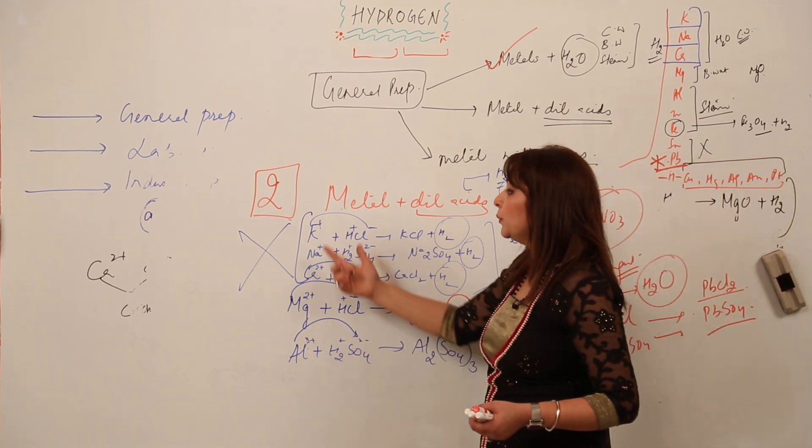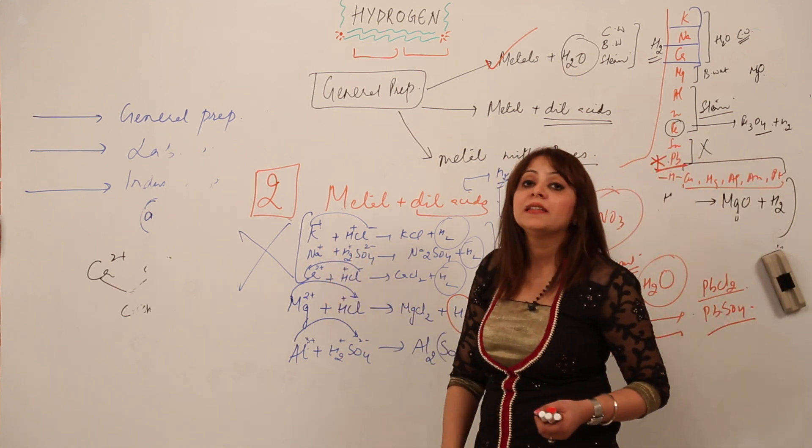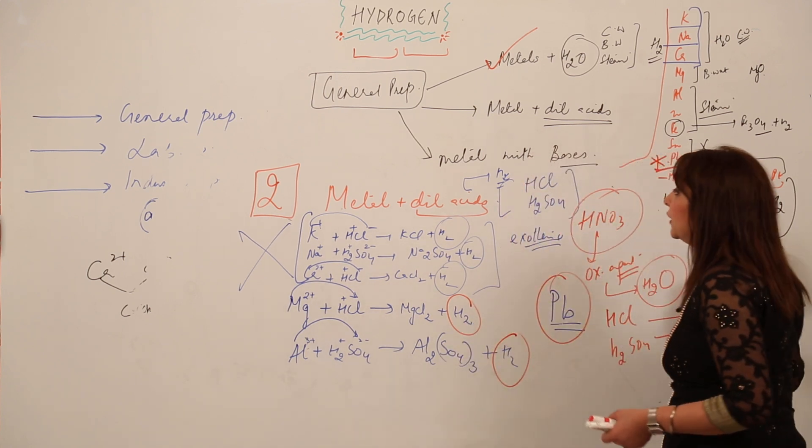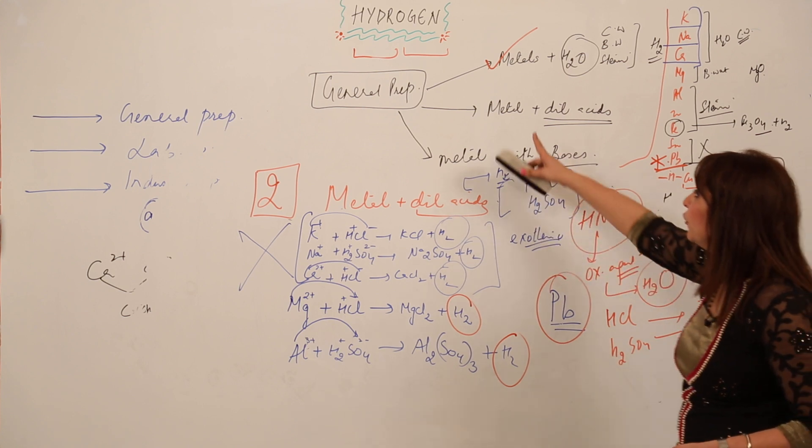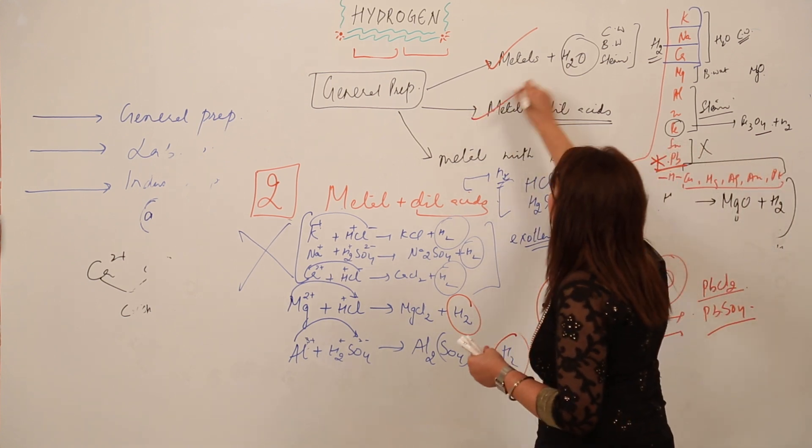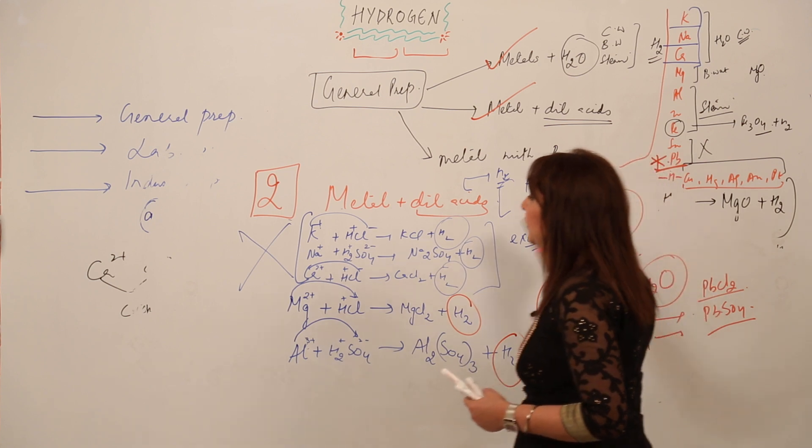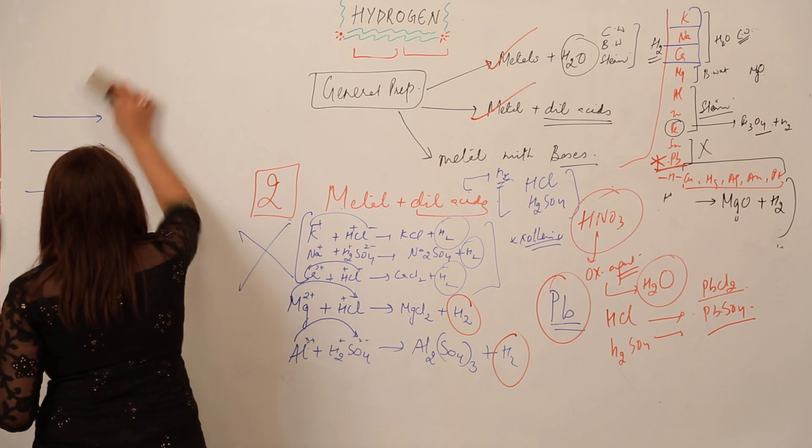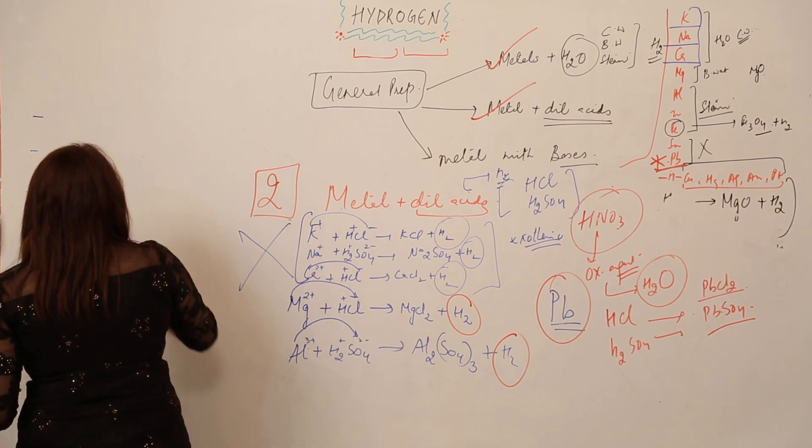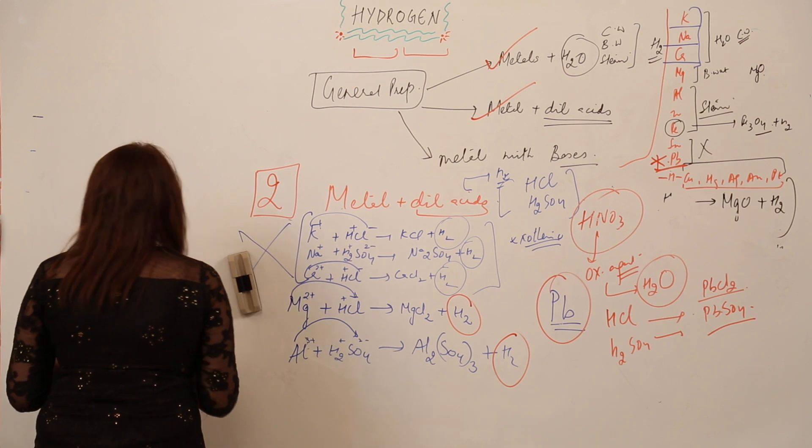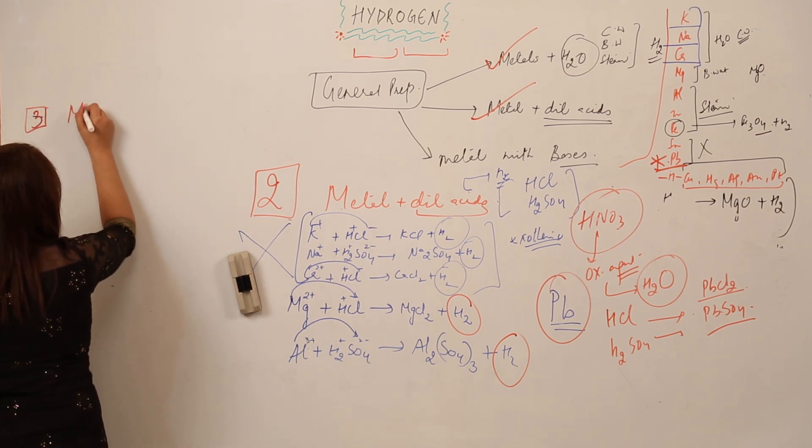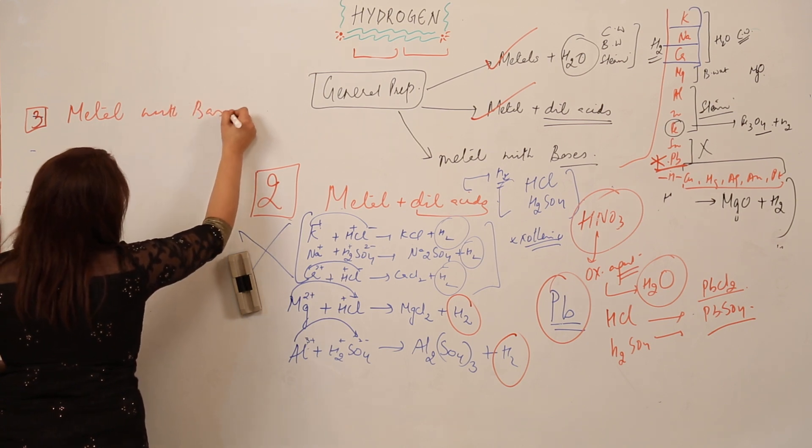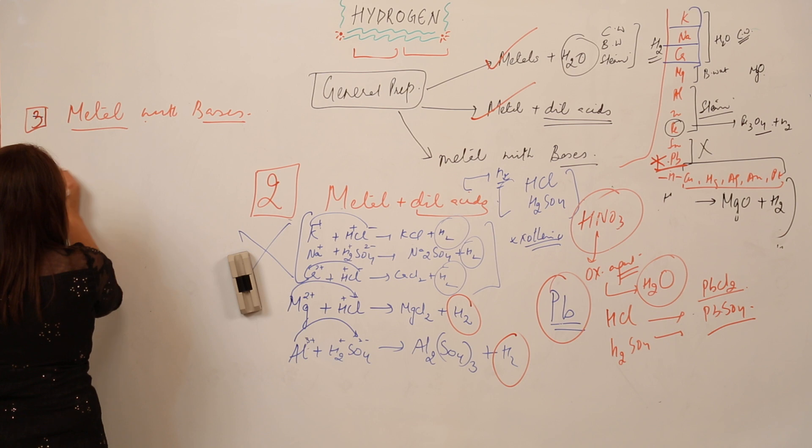Moreover, we cannot use potassium, sodium, or calcium as well. The reason being the reaction will lead to an explosion. So this is the second method which I have told you, that is the reaction of metal with dilute acid. The third method is easy because you're already familiar with the first two methods. The third method is the reaction of metal with bases.